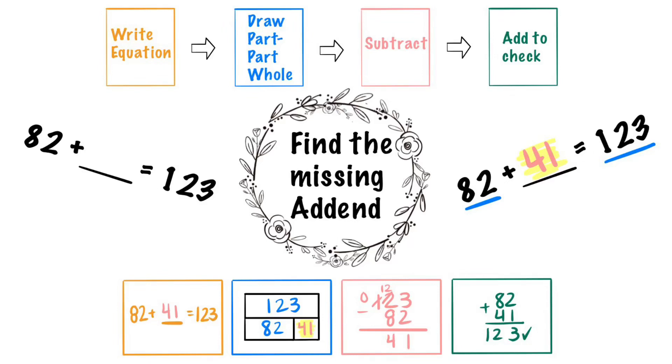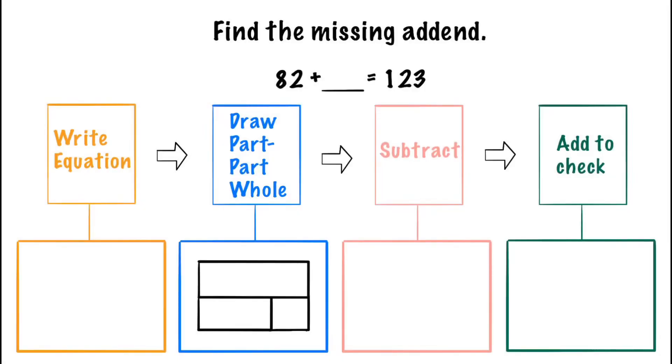Welcome back Math Gris. Today we will find the missing addend. We need to find the missing addend for 82 plus blank equals 123.